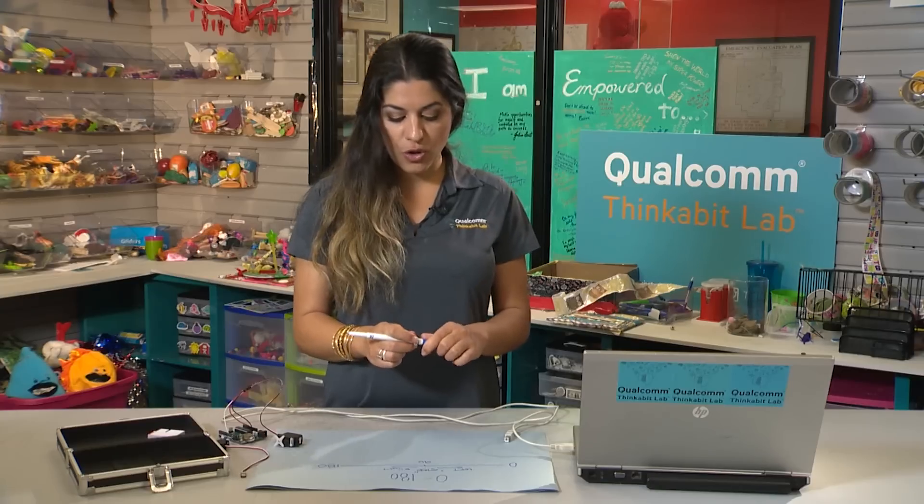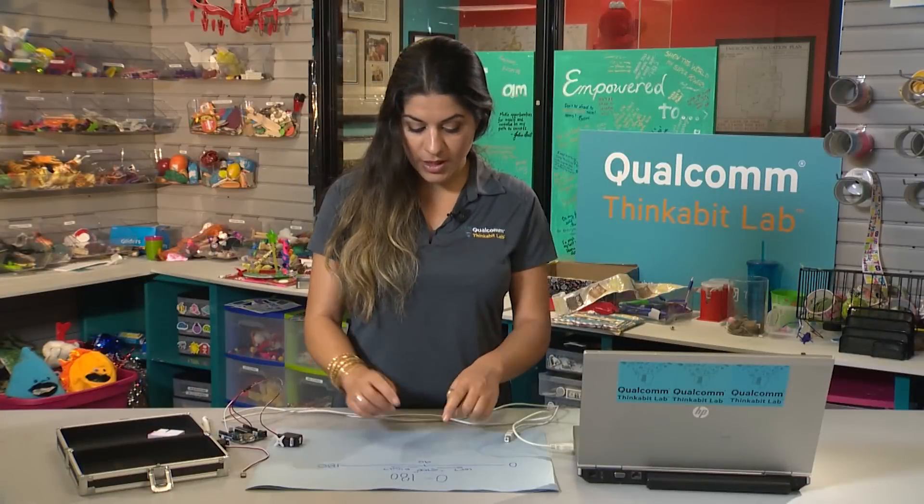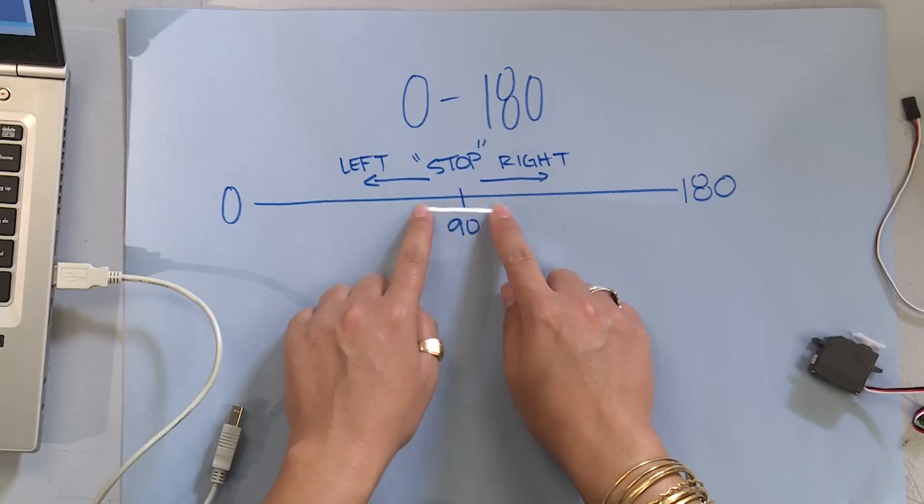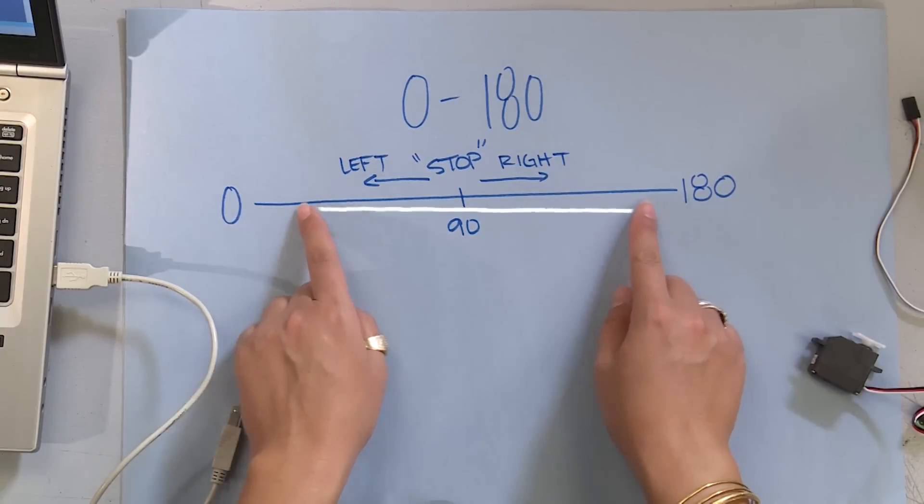I said you can control the speed and direction in which it spins. Looking at my fingers, the further away you get from 90, the faster you go. The closer you get to 90, the slower you go.